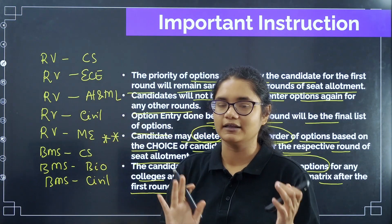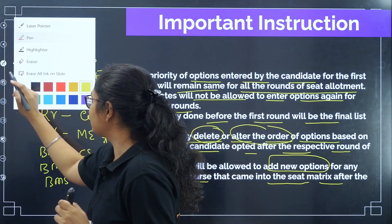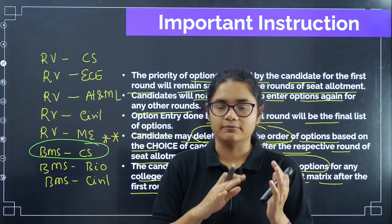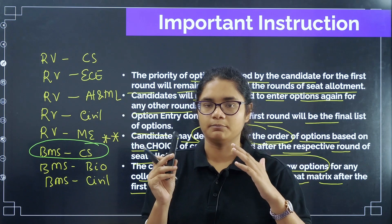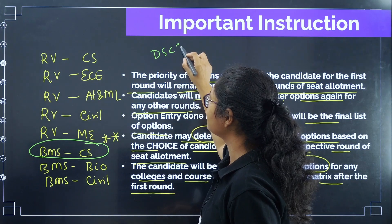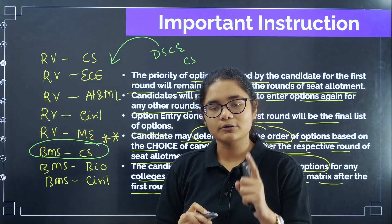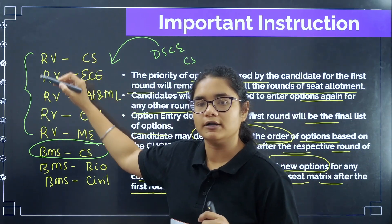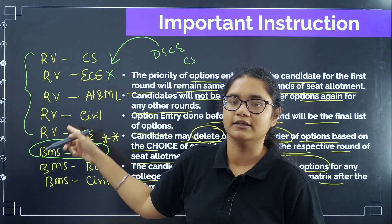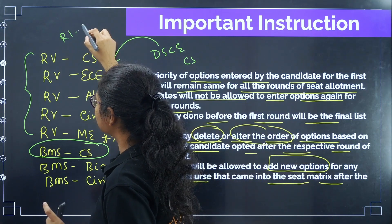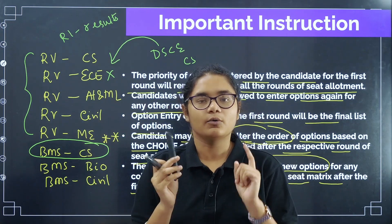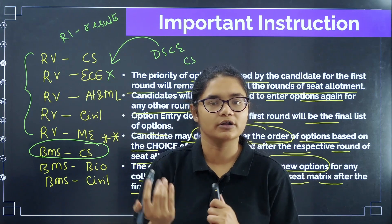Suppose that after Round 1 allotment, you have been allotted BMS Computer Science. Now before Round 2 starts, you will again have a period to edit your choices. At that time, you cannot add a new option like Dayananda Sagar College of Engineering Computer Science — you cannot add that to the option entry now. What you can do is, out of the remaining options, you can alter their order or delete any preference you want. But you cannot add any new college or option to the list after Round 1 results. After Round 1 results, the only things you can do are delete a preference or edit the order of preferences.